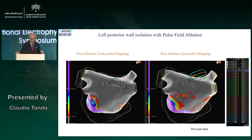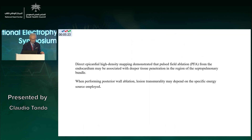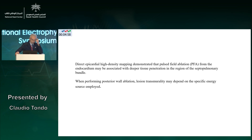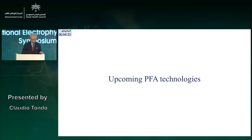This suggests that PFA can be truly transmural even when performing endocardial lesions. When performing posterior wall ablation, lesion transmurality may depend on the specific energy source employed. You cannot reach the same result applying RF to the posterior wall. I truly believe that PFA is a real revolution in our field because it can probably improve success rates even in patients with persistent atrial fibrillation.